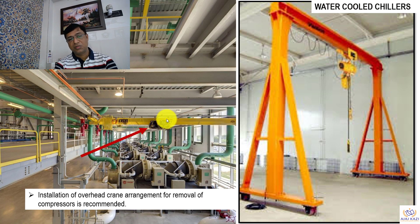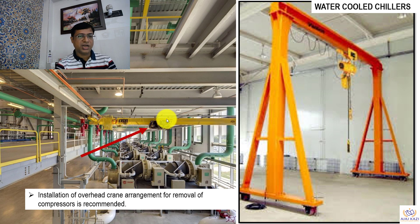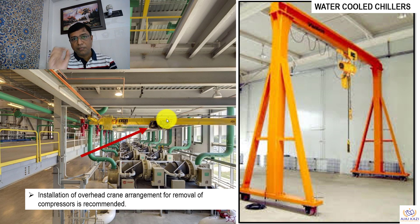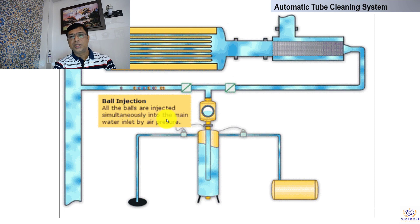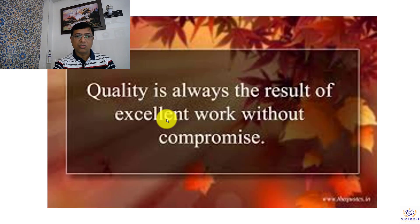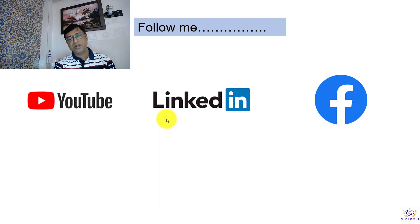Another important consideration is that chiller capacities are getting bigger and bigger. We need to plan how compressors can be taken out, which is why a crane arrangement installed at the plant room so that components can be quickly lifted for maintenance is another key element. We should also look at plant room layouts for chillers, including maintenance access for cleaning. There are automatic tube cleaning systems available as well. Quality is always the result of excellent work without compromise. I hope this has given you some value. You can follow me on YouTube, LinkedIn, and Facebook. Thank you very much for your patience.